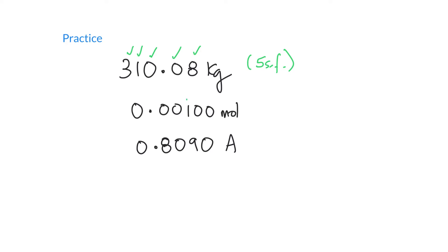For 0.00100: the 1 is definitely significant. The zeros at the front are leading zeros, so none of them are counted — even those after the decimal point but before the non-zero digit are just padding. There are no captive zeros. The zeros at the end are trailing zeros, and because there is a decimal point in the number, those trailing zeros are significant. So we have three significant figures.